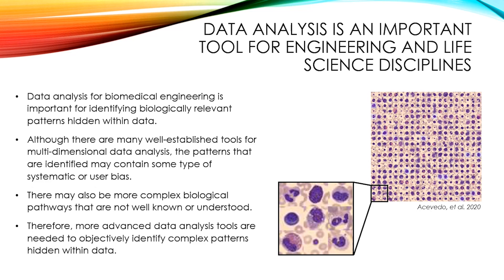This figure contains images of different cell types that require years of training to identify, and even then the identification is still prone to human error. This identification could be handled by a computer in a more objective way.